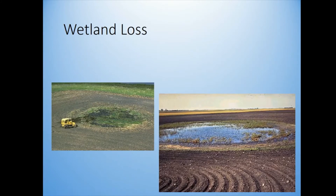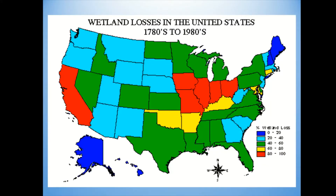Farmers would bulldoze wetlands, put drain tile in to drain them, and farm right up next to or through them. Wetlands went down in huge numbers — states just south of us lost between eighty to a hundred percent of their wetlands, because this is the bread basket of our country, where we grow a lot of corn and food.